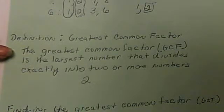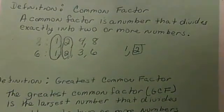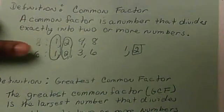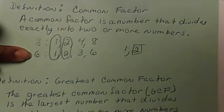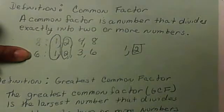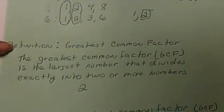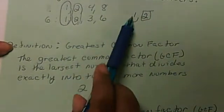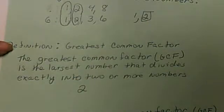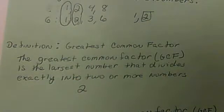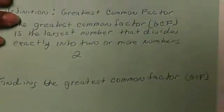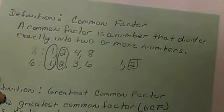So we use the list method. We listed the factors of 8 and 6. We found out what all of the common factors were, only to eventually find the greatest common factor from our list of common factors. Now we're going to learn how to find a GCF in our calculator, and we're going to use the same numbers, 8 and 6.